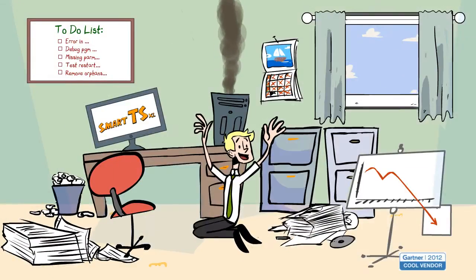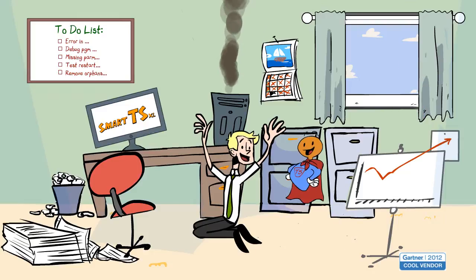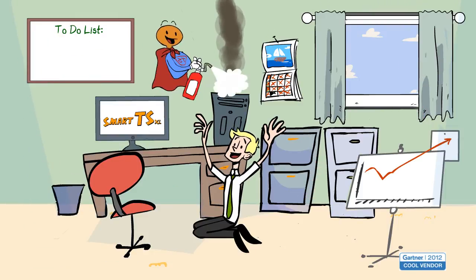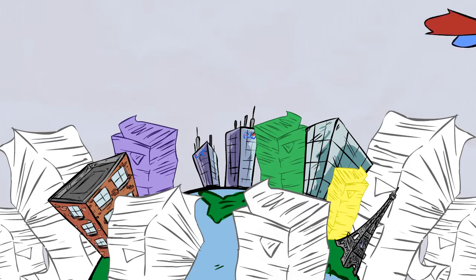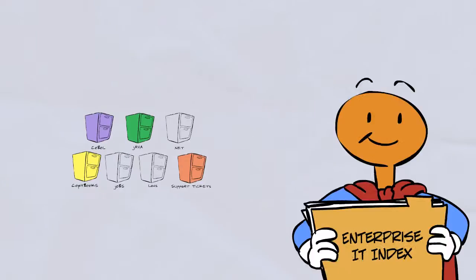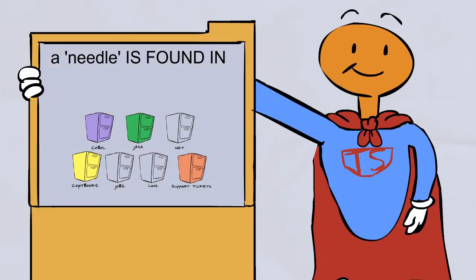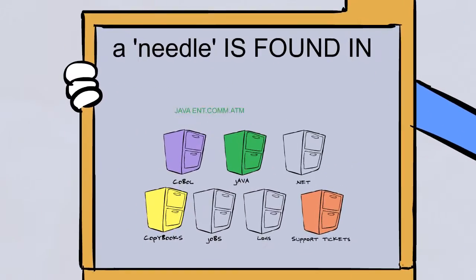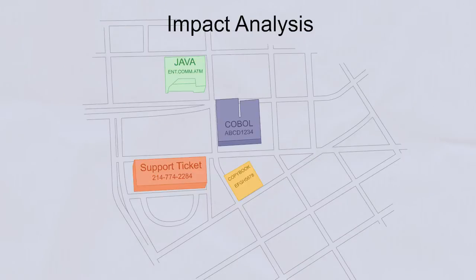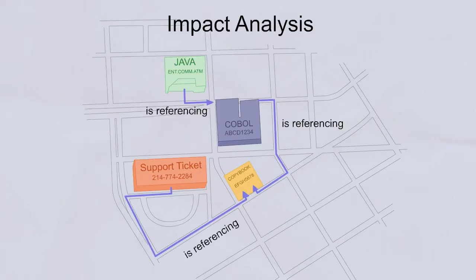Easy, with SmartTS XL, Incom's groundbreaking search, impact, and analysis tool for IT pros like you. SmartTS takes all of your textual assets and makes them instantly and easily searchable by anyone, from anywhere, securely, using only a web browser — while mapping their impact by automatically finding the references to and from each element across any platform or language.